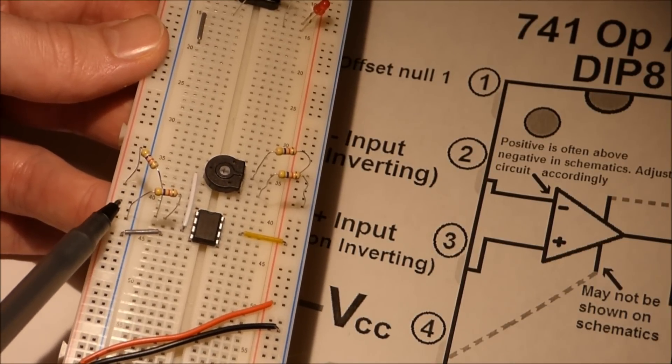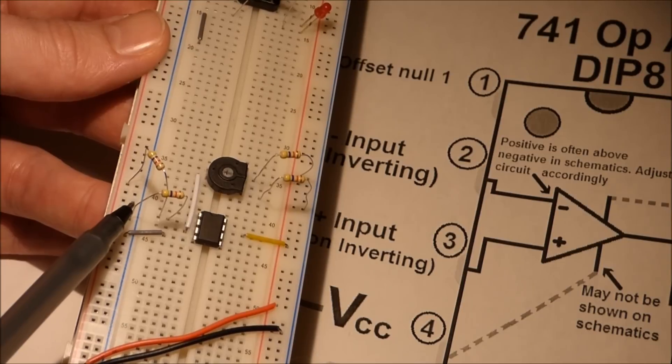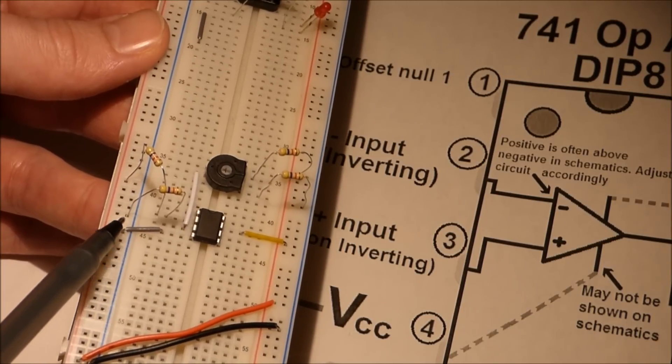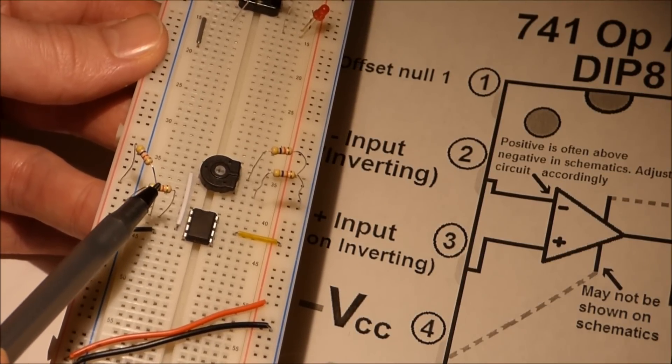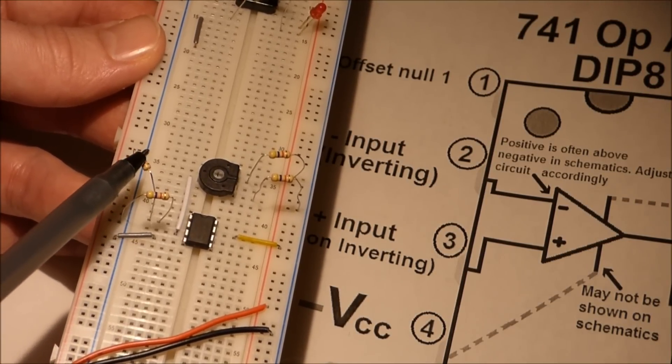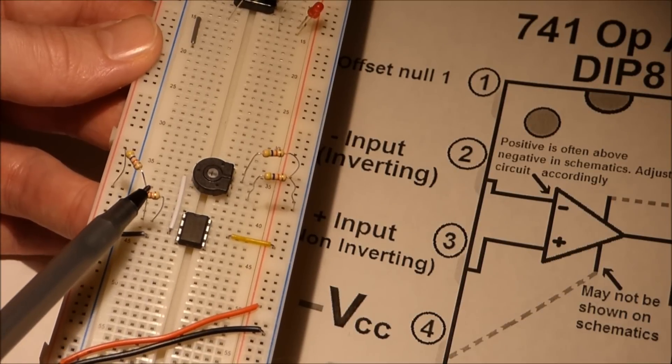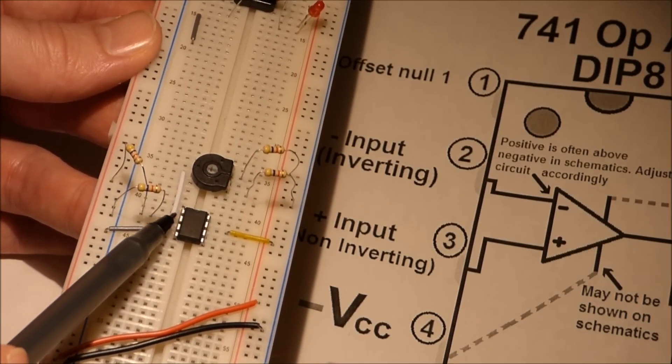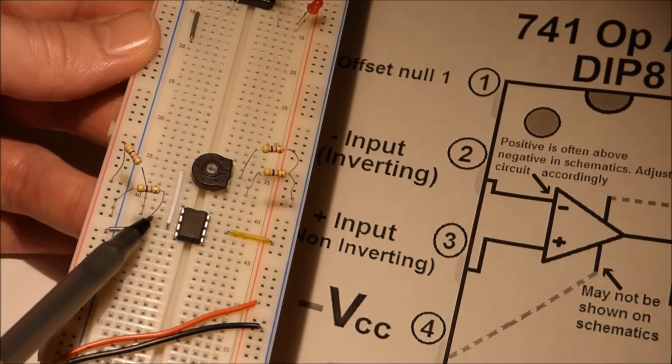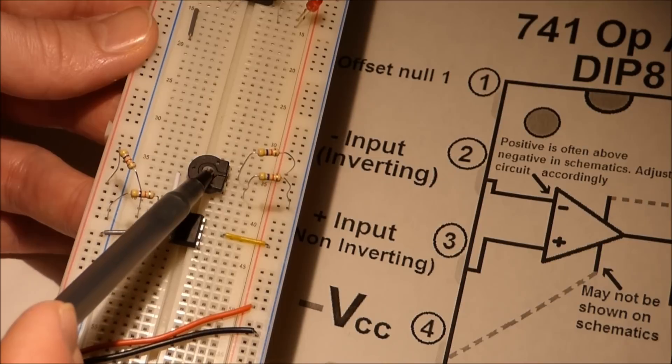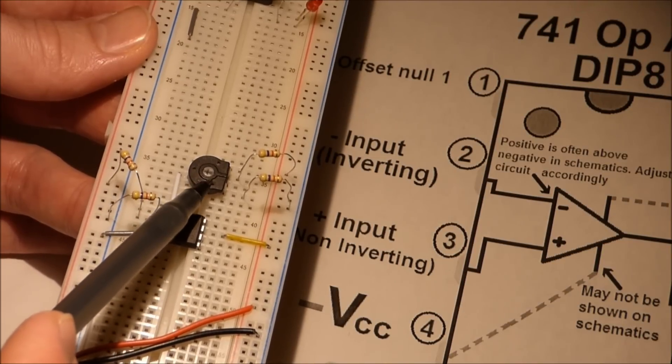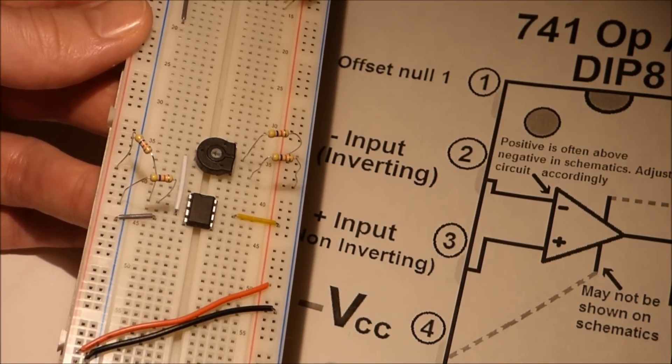Now, since these are the same value, they're 4.7 kilo-ohms, 4,700 ohms, that means this is going to split it in half, and that's going to split it in half, since it's the same value. So we'll have 9 volts coming to pin 2. With pin 3 here, we adjust this above and below 9 volts to turn the output on and off.